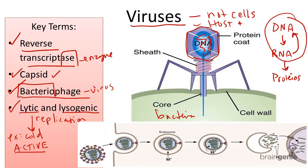The lytic cycle occurs when a virus enters a cell, produces its own DNA using the cell's machinery, and then lyses — or bursts out of the cell — leaving a dead cell behind, or leaves by exocytosis, leaving a living cell behind. It then moves on to infect other cells.